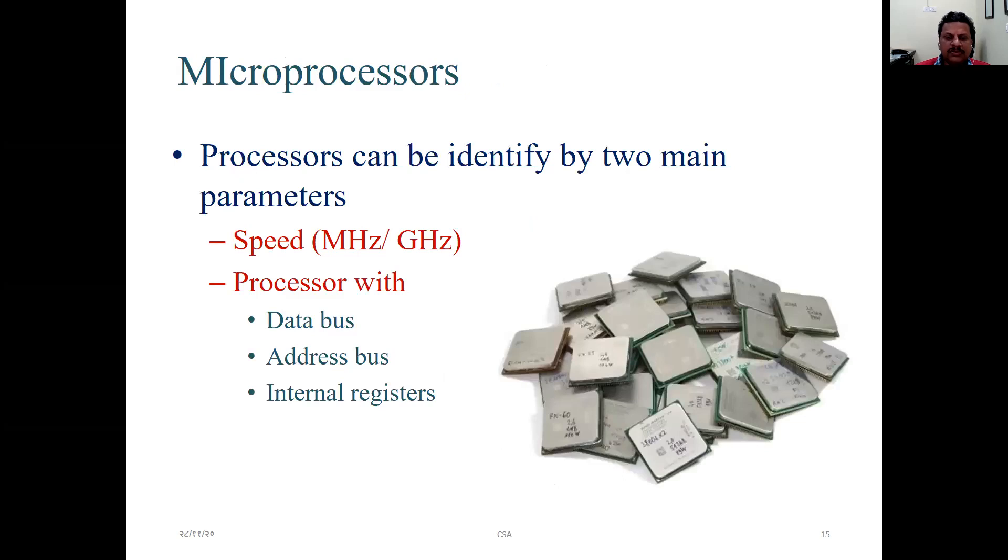Microprocessors, processors can be identified by two main parameters. How to differentiate between processors? One is speed in either megahertz or gigahertz. By speed you can identify the difference between processors and also the processor is having features with data bus, address bus, internal register, graphical bus and all that.